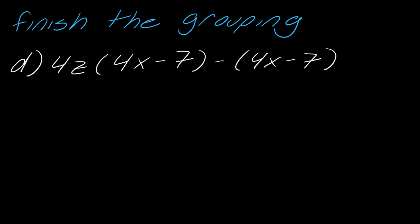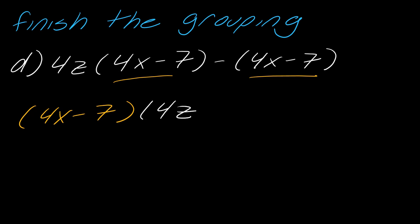Okay, one more here and then we'll move on. Pause and think about it, then hit play when you're ready. In this case I do have 4x minus 7 — those are definitely the same. So I've got 4x minus 7. Now what do I write in the other set of parentheses? I've got 4z. There's no number here, but we have to assume what's there — there's an invisible minus 1 — so that's what goes in our other set of parentheses. That's how that one works.